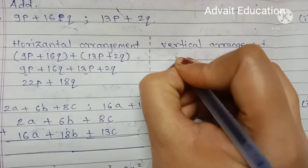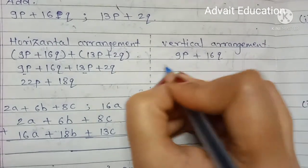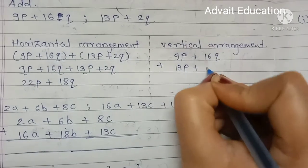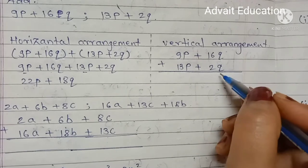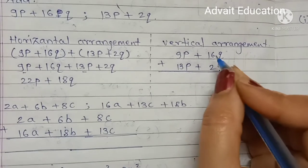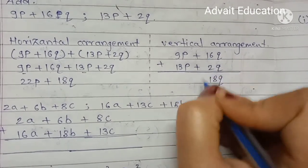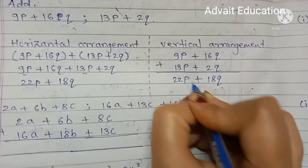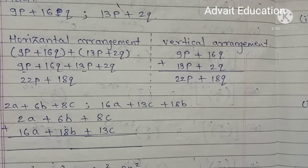Vertical arrangement: 9P plus 16Q, plus 13P plus 2Q. Adding: 16Q plus 2Q equals 18Q, 9P plus 13P equals 22P. The answer is the same in both methods.